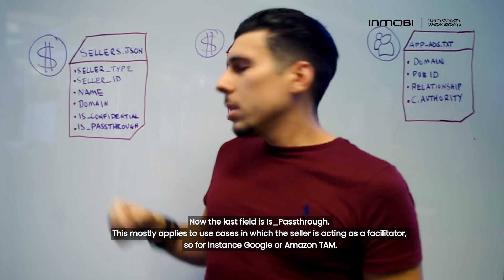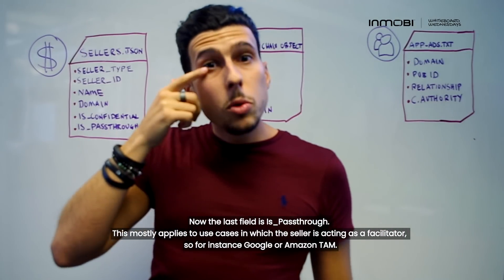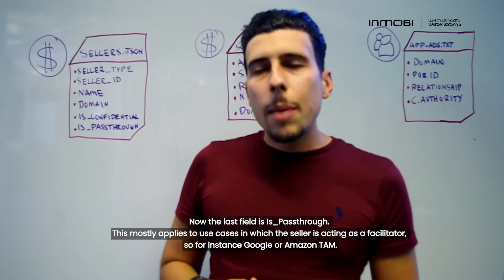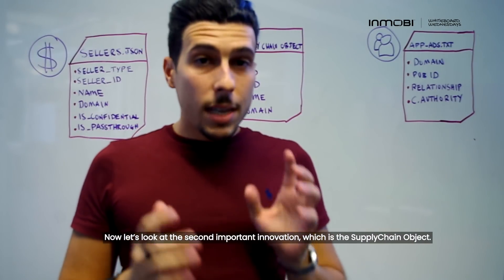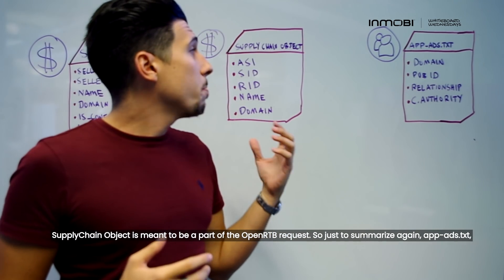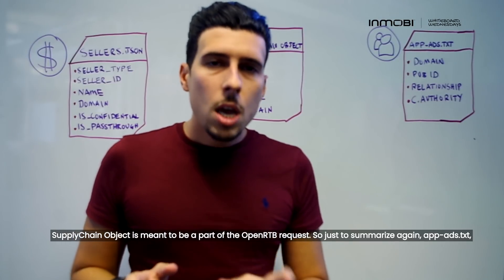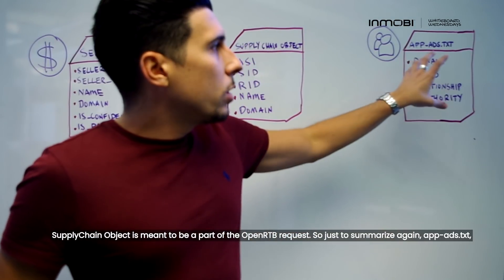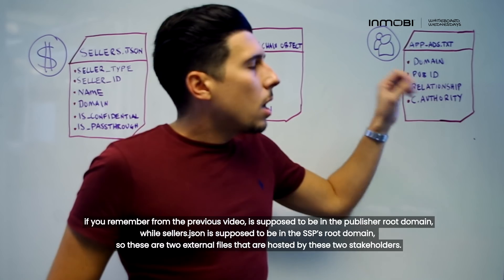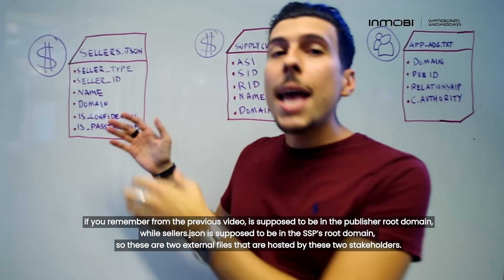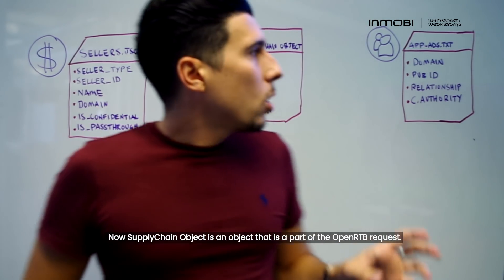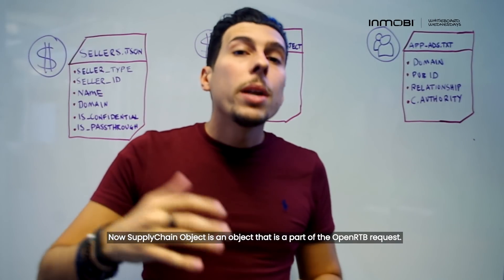The last field is is_passthrough. This mostly applies to use cases in which the seller is acting as a facilitator — for instance, Google AdX or Amazon TAM. Now let's look at the second important innovation, which is supply chain object. Supply chain object is meant to be a part of the OpenRTB request. To summarize: app.ads.txt is supposed to be in the publisher root domain, while sellers.json is supposed to be in the SSP domain. These are two external files hosted by these two stakeholders. Supply chain object, on the other hand, is an object that is part of the OpenRTB request.